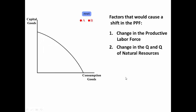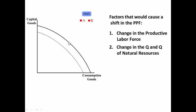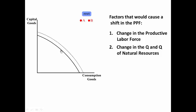A change in the quantity and quality of natural resources. If the natural resources get better, then you will see that the production capabilities of that country or entity will shift outward, and if the quality and quantity of natural resources are worse, then that would shift the production possibilities frontier inward.